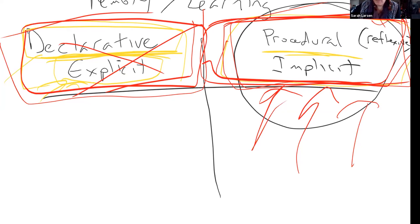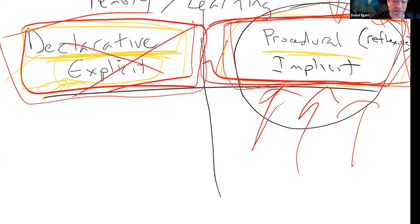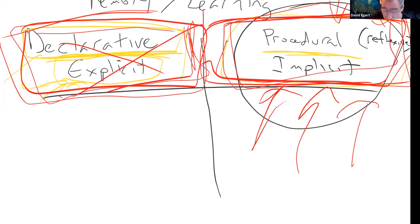Declarative explicit learning is like conscious learning — the stuff you know you know, versus implicit which is the stuff you don't know you know. You actually do know stuff but aren't consciously aware that you know it. Interestingly, in the movie Memento, the character doesn't seem to have implicit learning either, whereas in real cases of hippocampal damage, people lose explicit memory but still retain this implicit learning.